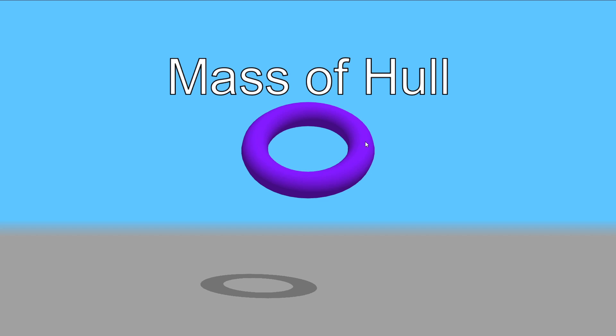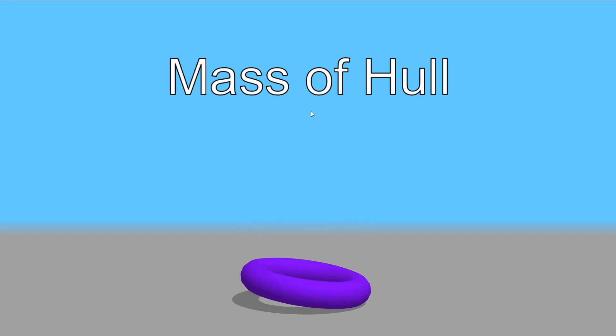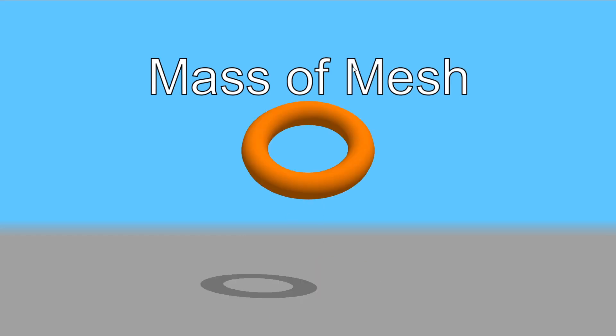Let's look at the limitations of mesh versus hull. Here we have a hull object suspended in air. If we turn on dynamic physics for this hull, we can see the object has mass, there's mass distribution, and gravity makes it fall to the ground. But if we try the same with a mesh object and turn on dynamic physics, in Unity that won't even be possible because Unity does not allow dynamic physics on a mesh object since Unity 5. The only options for a mesh collider are either static or kinematic.